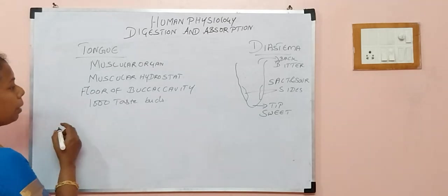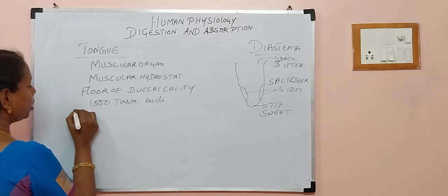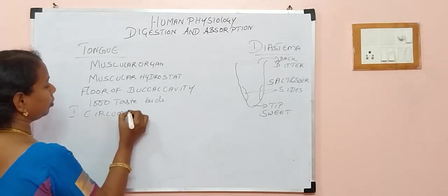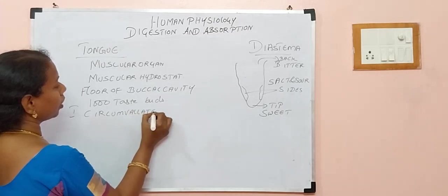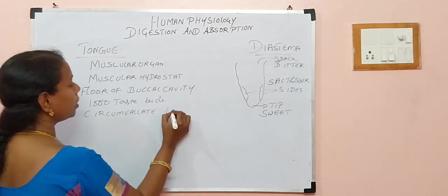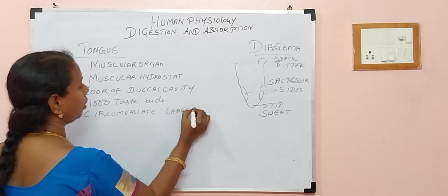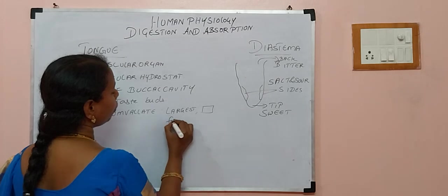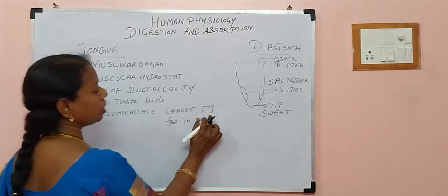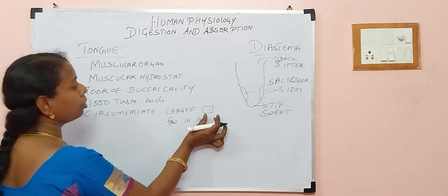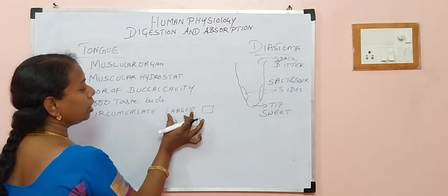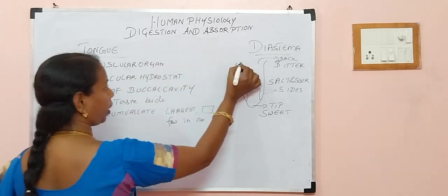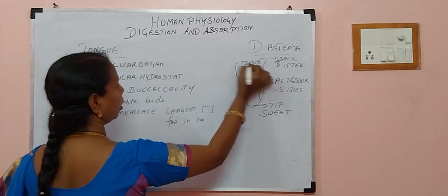Now, what are the papillae for the taste buds? The first one is called circumvallate. It is the largest papilla, described as having a four-sided ball shape, and it is few in number. You can find these circumvallate papillae at the back of the tongue.